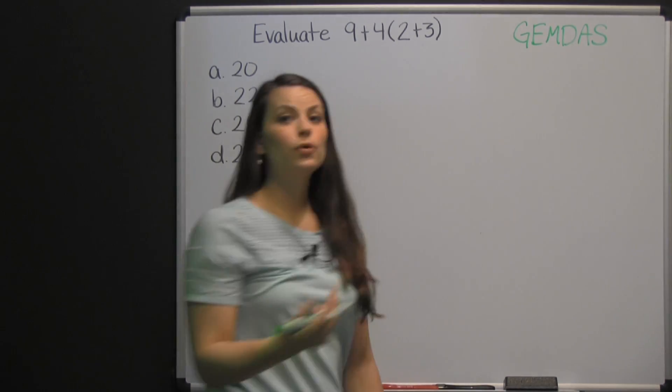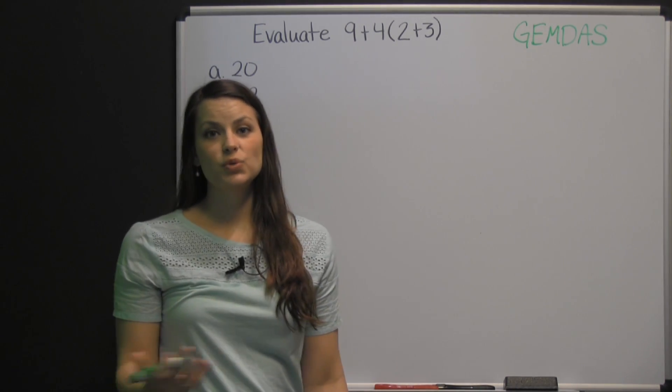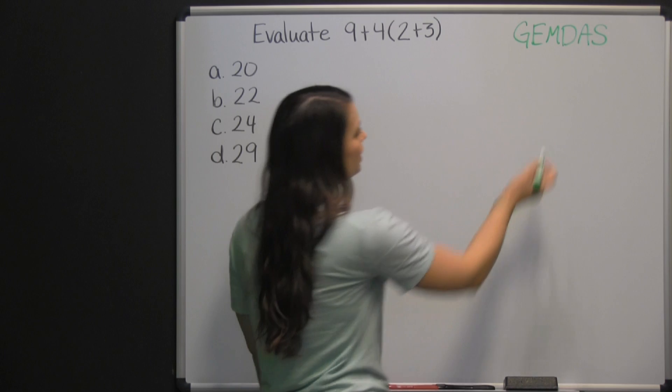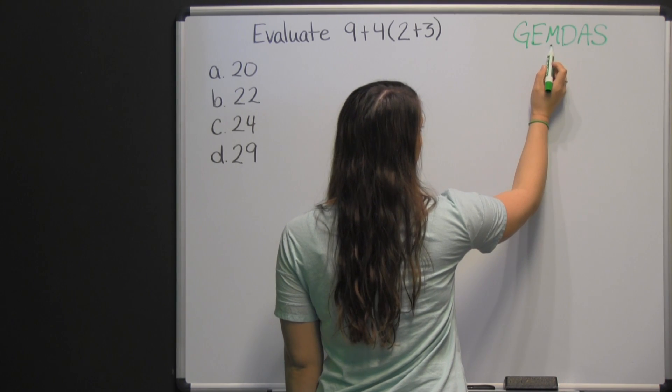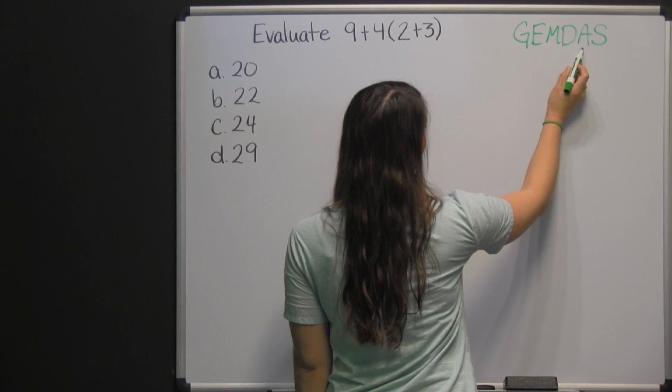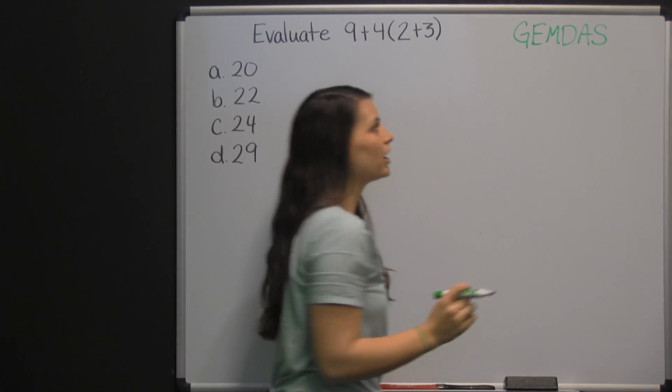The G stands for grouping symbols, like parentheses or brackets. The E stands for exponents, M multiplication, D division, A addition, S subtraction.